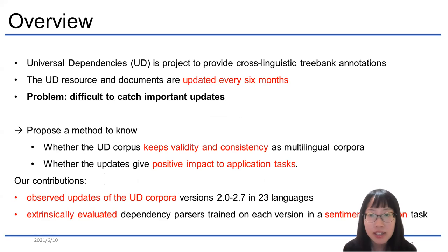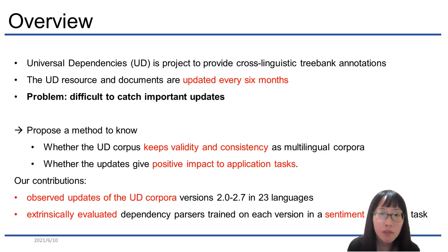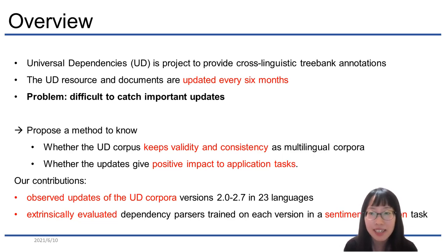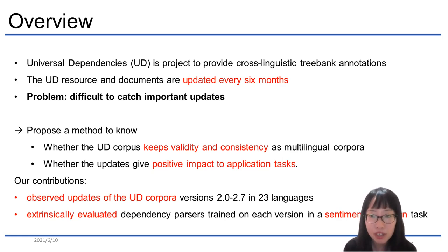For example, when the lemma of words is changed, it is not easy to immediately identify if it is a bug or if all the entries for the bug in the corpus have been updated. We propose a method to analyze whether the various treebanks of UD are updated with validity and consistency, and whether the updates have a positive impact. We observed updates of the UD corpus version 2.0 to 2.7 in 23 languages and extrinsically evaluated the parsing models trained by the UD corpus in a cross-level sentiment extractor. Our methodology allows us to directly compare the differences between different versions of the UD corpus by analyzing the changes in the output of the application task.